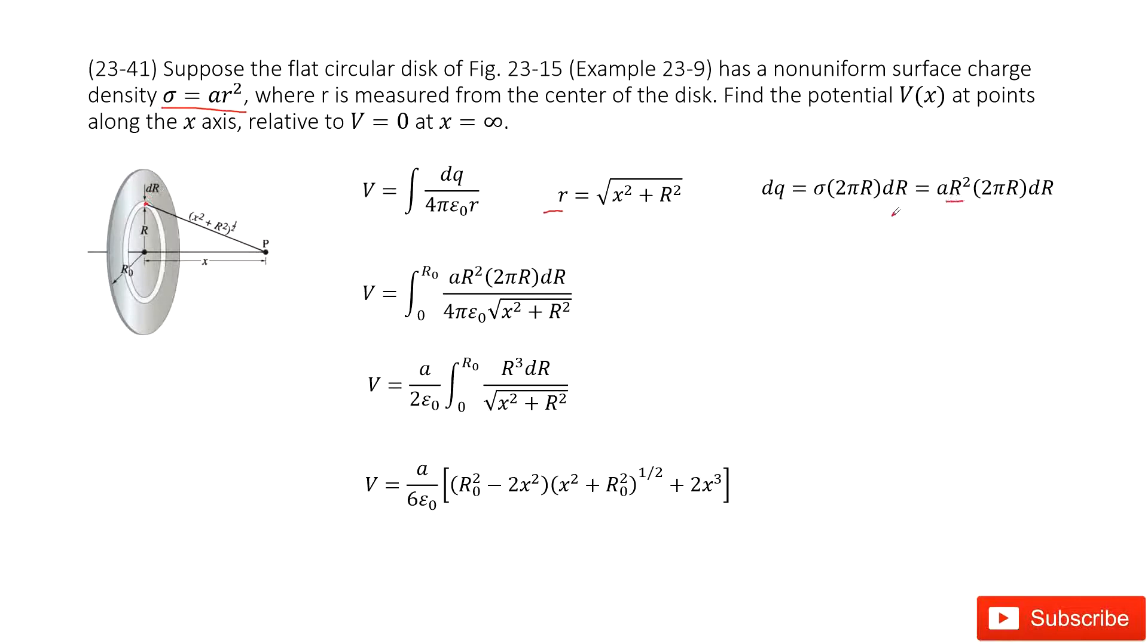So then the function looks like this one. We input the dq and r inside. Then the function looks like this one. We can take the constant out and simplify the π terms, and then we get a function that looks like this one.